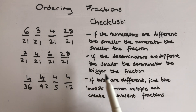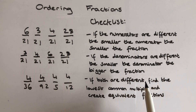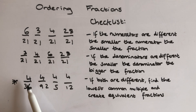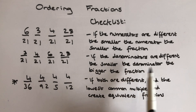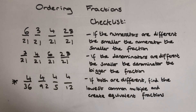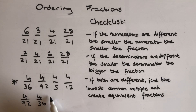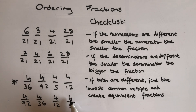It says if the denominators are different, the smaller the denominator, the bigger the fraction. So I have all my denominators different in this line here. My numerators are all exactly the same. So this is a really really big one here, so I'm going to put that one at the start: 4 over 92. Next would be 4 over 36, then 4 over 12, and the biggest number is actually going to be 4 over 5, even though it looks like it's smaller with the smaller numbers.